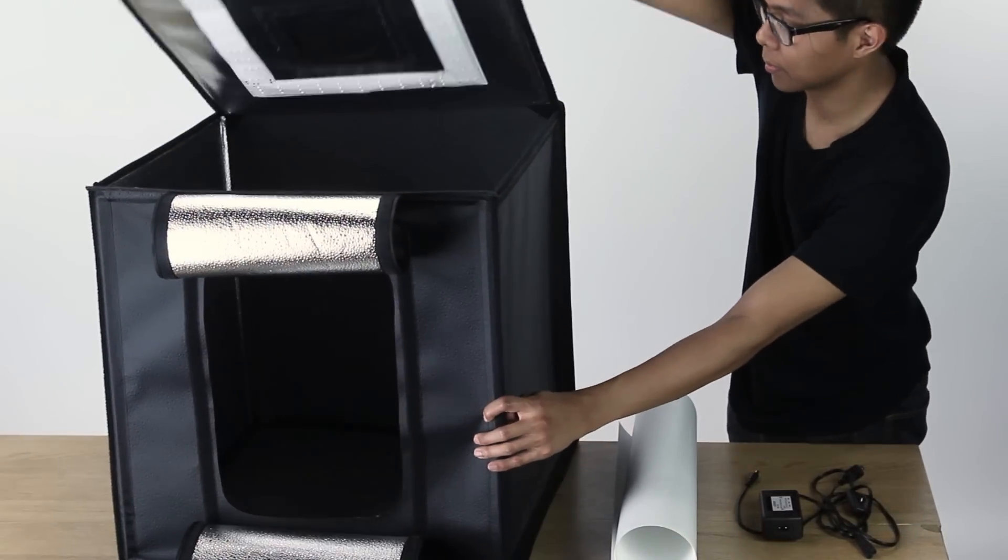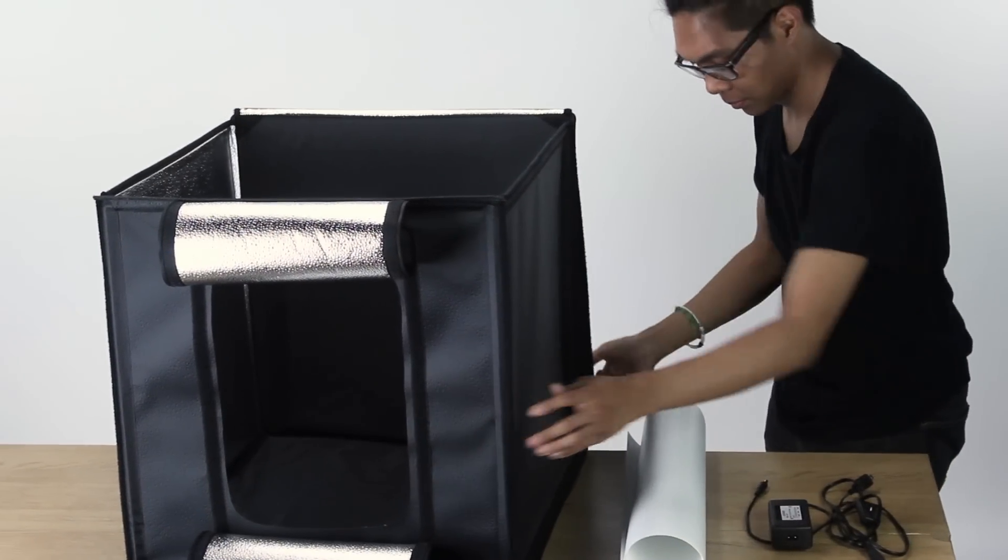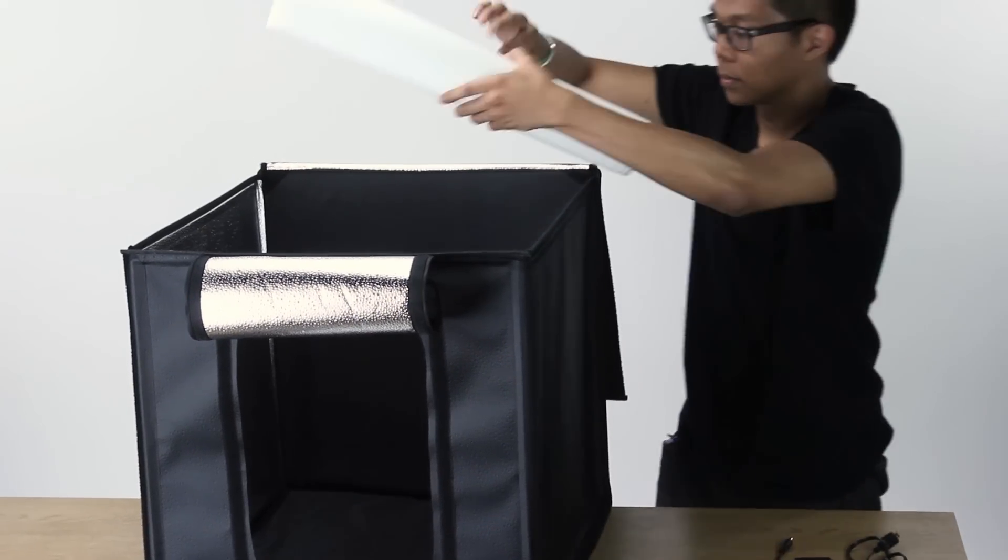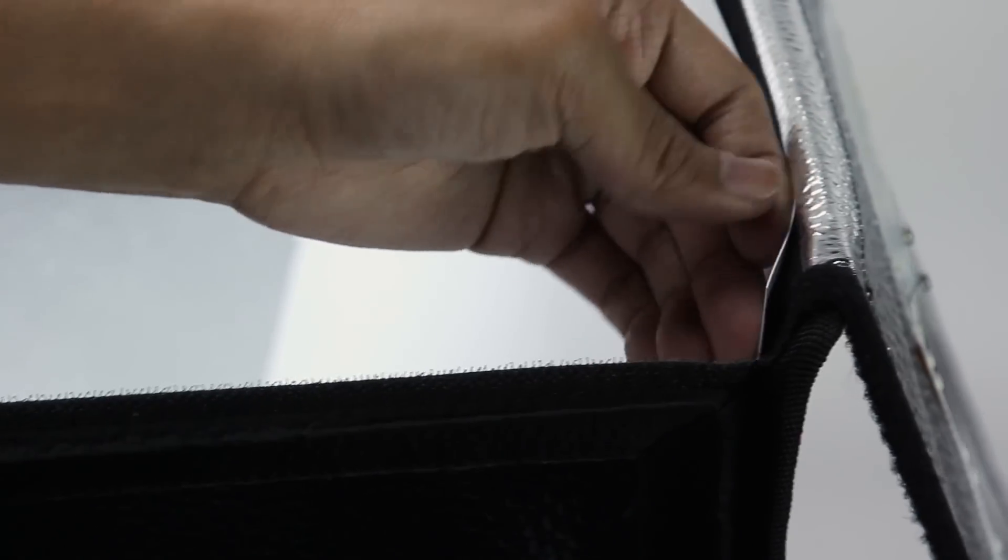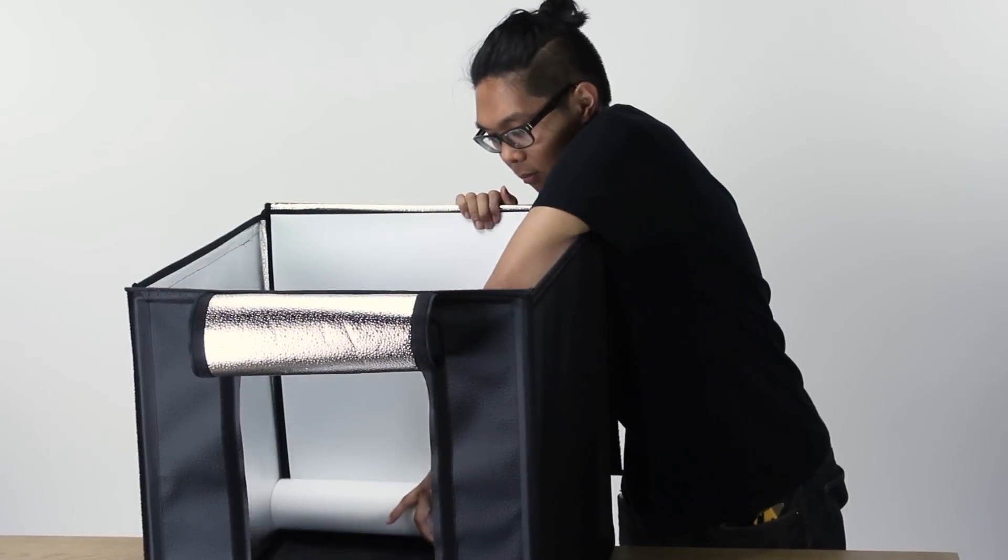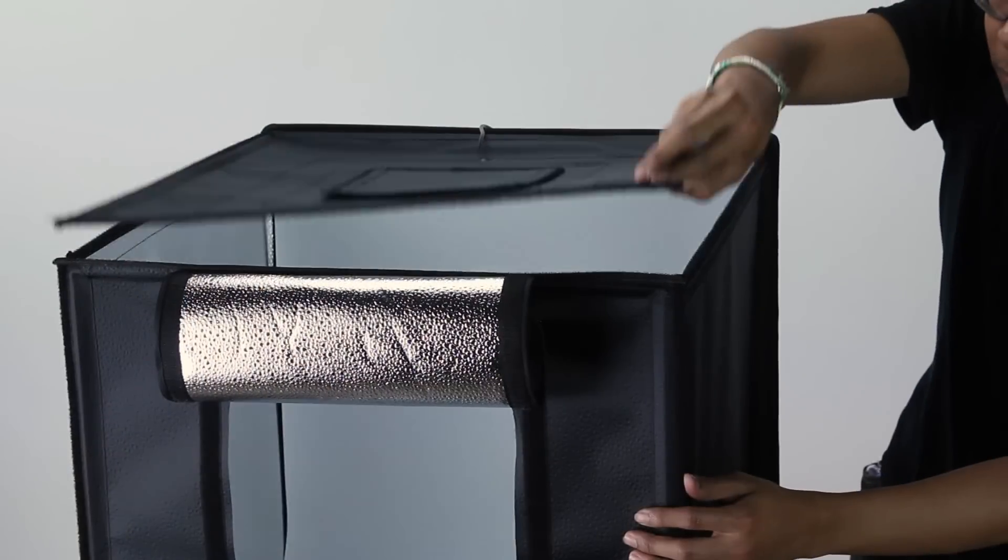Now it's time to add a backdrop. Open the top of the light tent and slide one of the four colored backdrops into place, attaching the left and right corners of the backdrop to the left and right corners of the back of the tent. Carefully roll the backdrop down to the bottom front of the tent and tuck it into the sleeve. Now close the top.